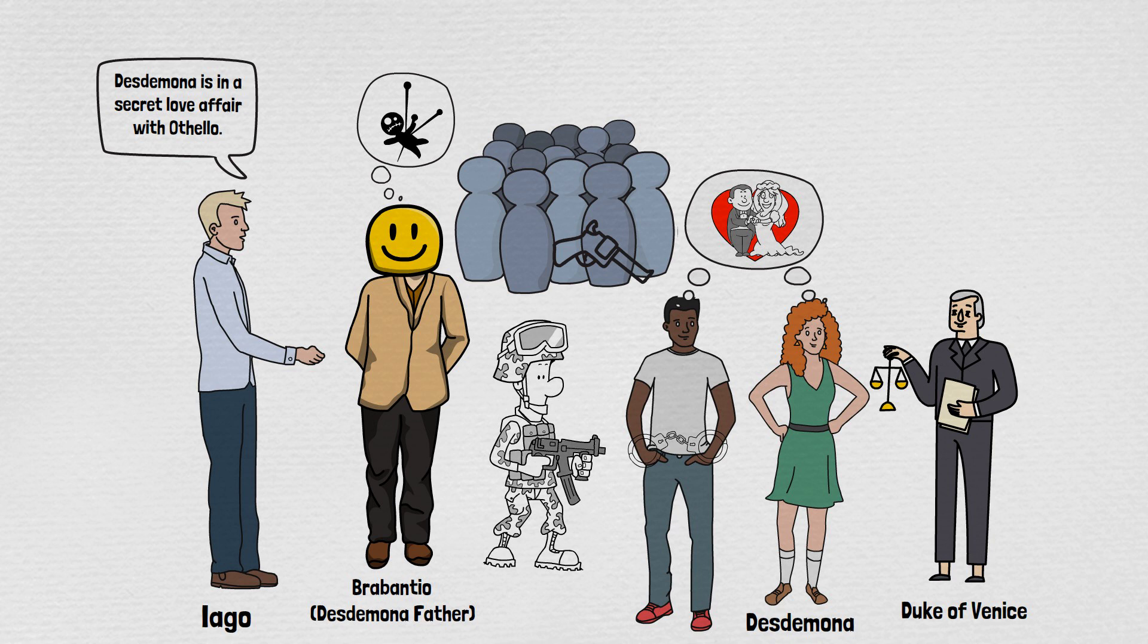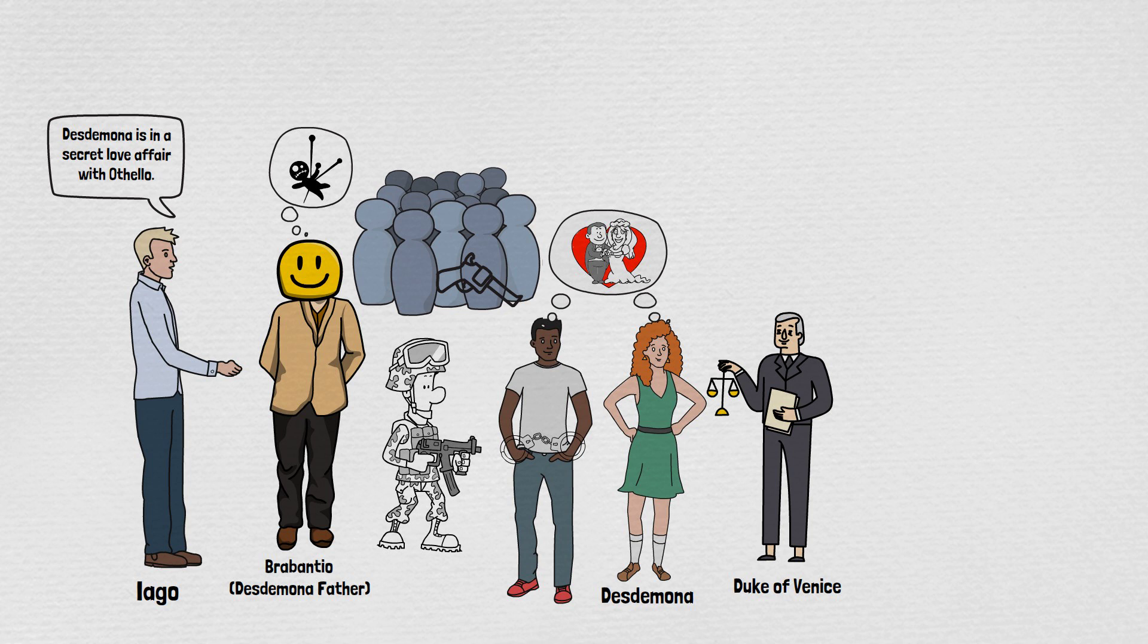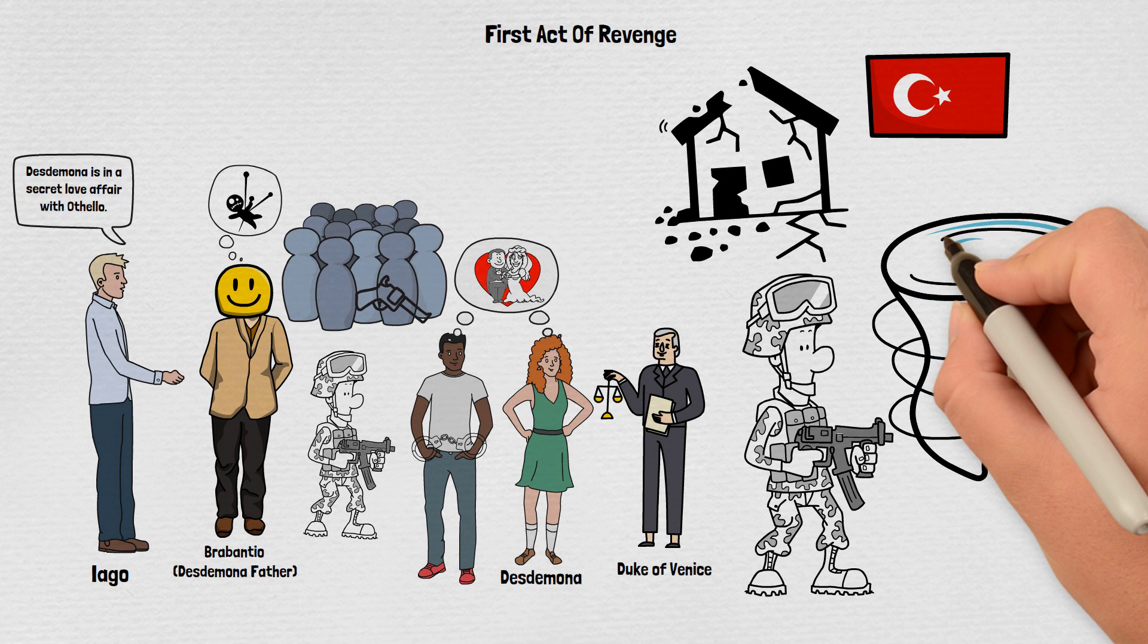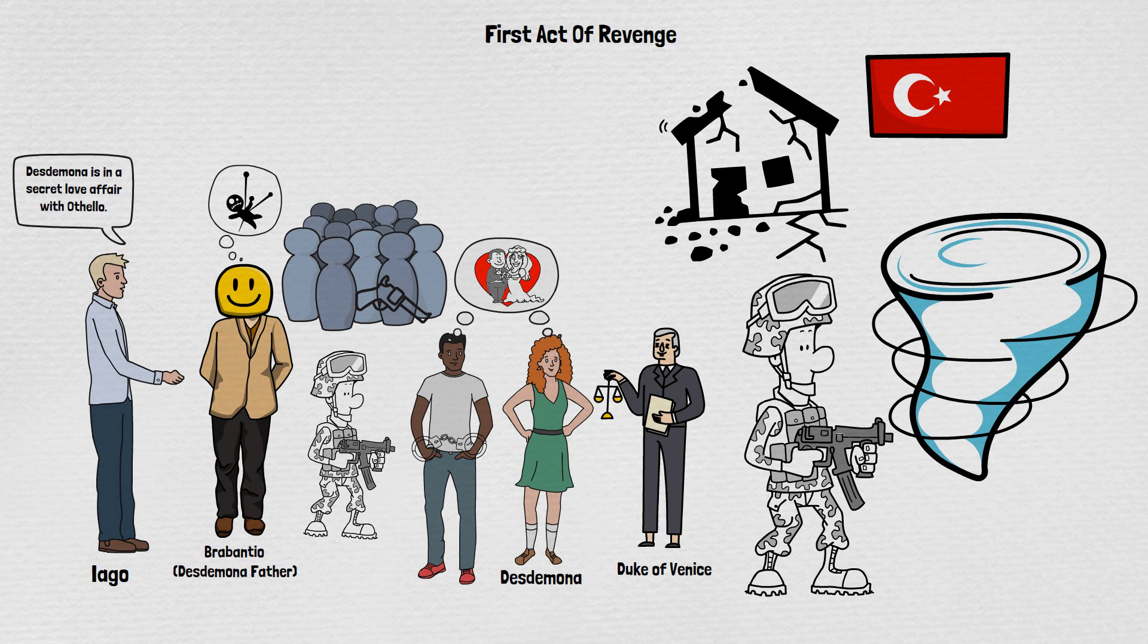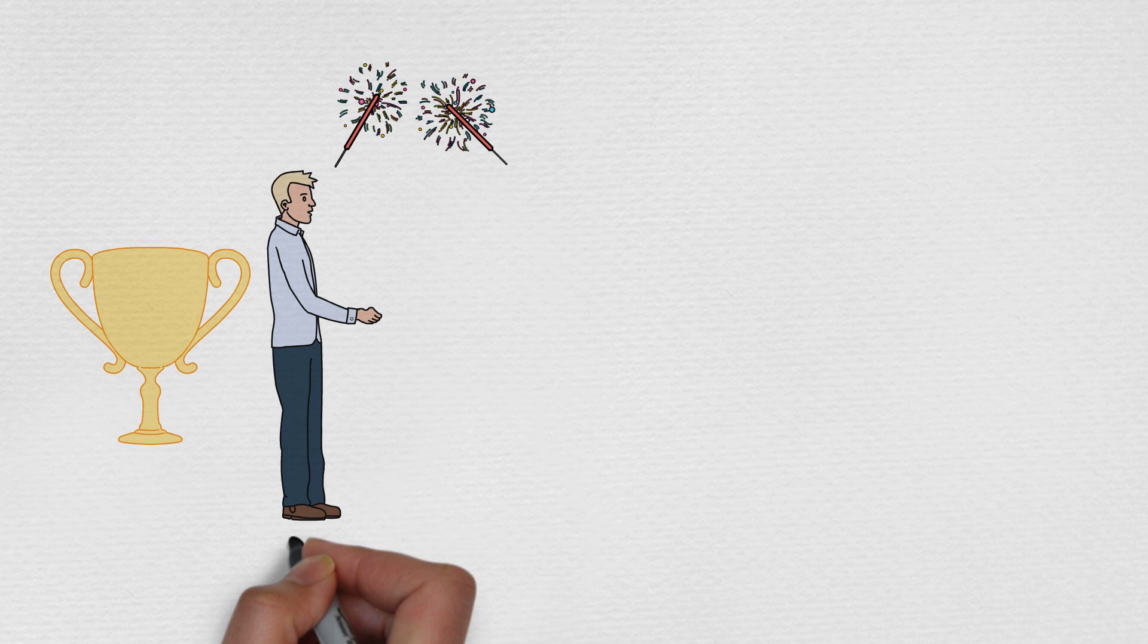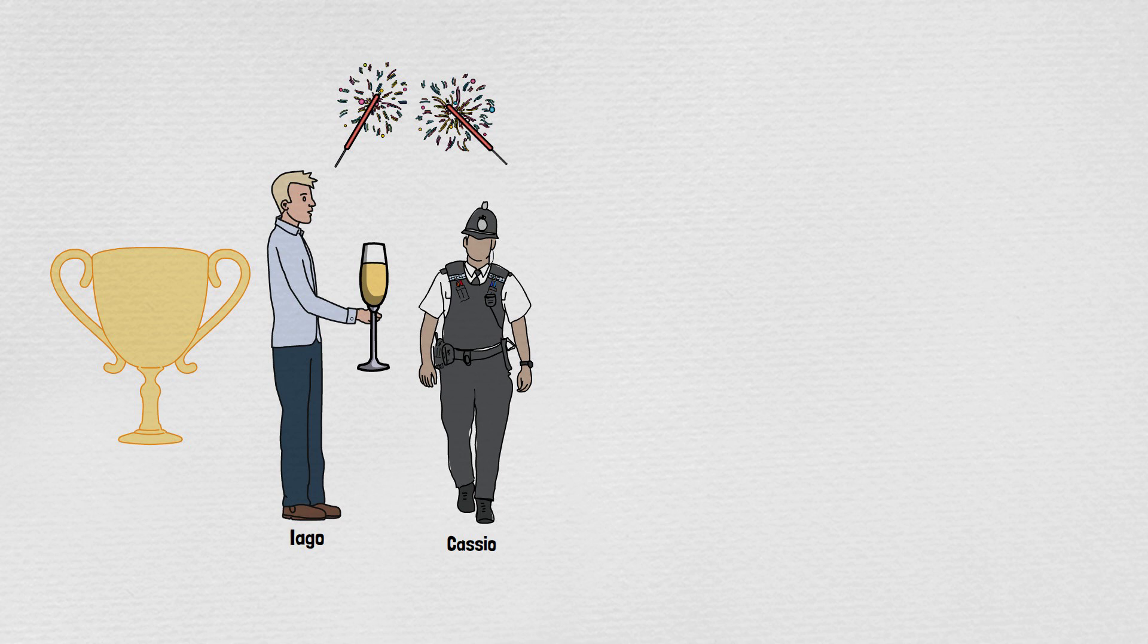So now after the marriage what happens is that there comes the news that the army of Turkey is destroyed in huge winds. So they all are very happy that without even going to the war they've won this war. So they start celebrating their victory. Now here what Iago does is that he makes Casio consume alcohol during the celebration and then he makes him fight with another character named Montano.